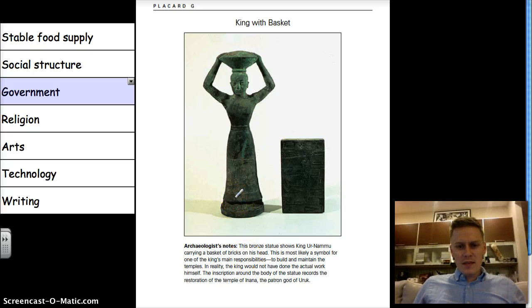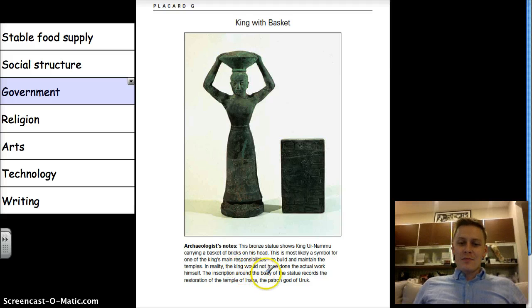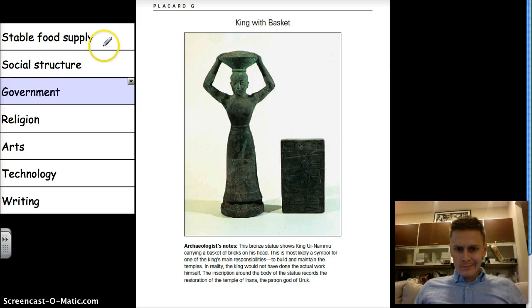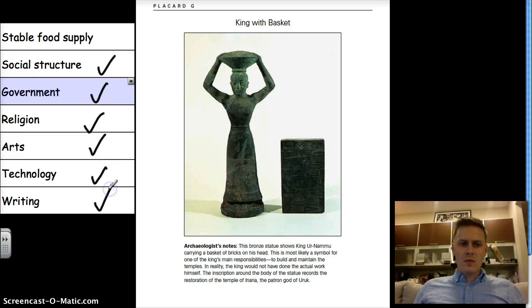We have a king with a basket. This bronze statue shows King Ernamu carrying a basket of bricks on his head — most likely a symbol for the king's main responsibility to build and maintain temples. In reality, the king would not have done the actual work himself. The inscription around the body of the statue records the restoration of the temple of Inanna, the patron god of Uruk. Food supply — no. Social structure — yes, there's a king. Government — yes. Religion — yes, the patron god of Uruk. Arts — yes, building temples. Technology — yes. Writing — yes, the inscription.